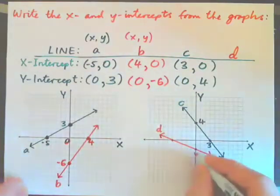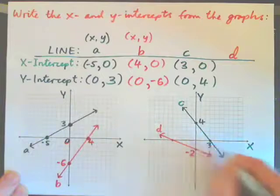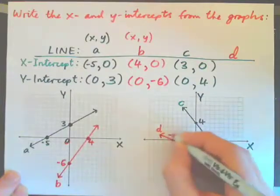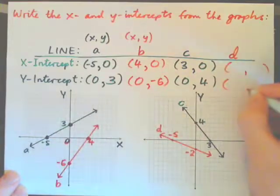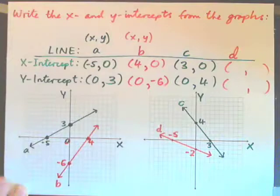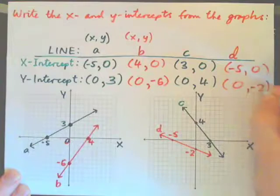So now on D, that goes through the y-axis at negative 2. It goes through the x-axis at negative 5. So give the x and y-intercept for line D. Press pause and do it. And you should have negative 5, 0 and 0, negative 2.